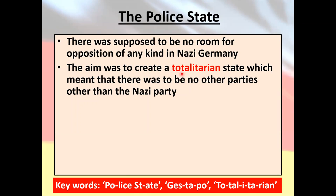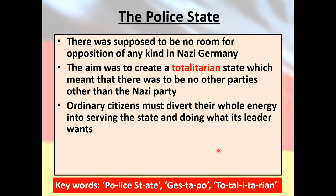The aim was to create a totalitarian dictatorship. Look these words up — 'totalitarian' and 'dictatorship.' This would mean there would be no other parties — he banned any other political parties. The only political party that could exist was the Nazi Party, and in fact all German citizens had to be party members. What this meant is that everyone — the entire country — would divert all their work, all their effort, all their energy into serving the state and providing what the state wanted and needed.